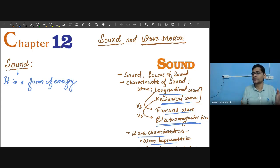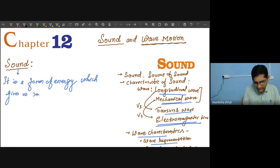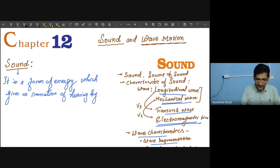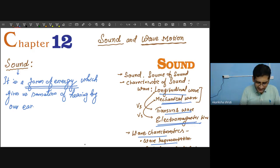Sound is a form of energy which gives us the sensation of hearing — the sense of hearing by our ear. So sound is a form of energy; its purpose is to give the hearing sensation, and this hearing is done by means of the ear of the organism. The ear is like a receiver for our sound.